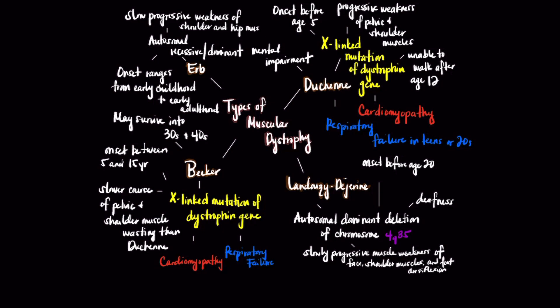This diagram illustrates four types of muscular dystrophy: Herb, Duchenne, Becker, and Landauzy-Dejerine. It's important to note that both Duchenne and Becker share a common trait in that they are both X-linked recessive disorders found in males, as highlighted in yellow.